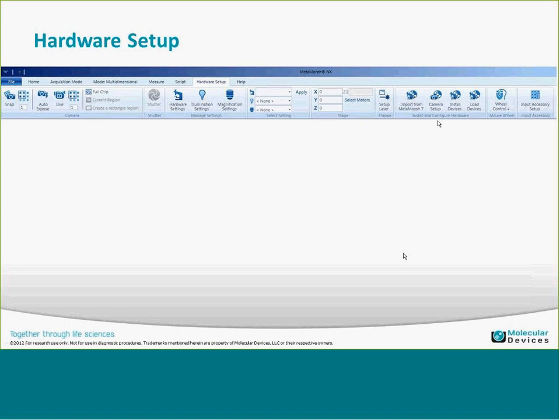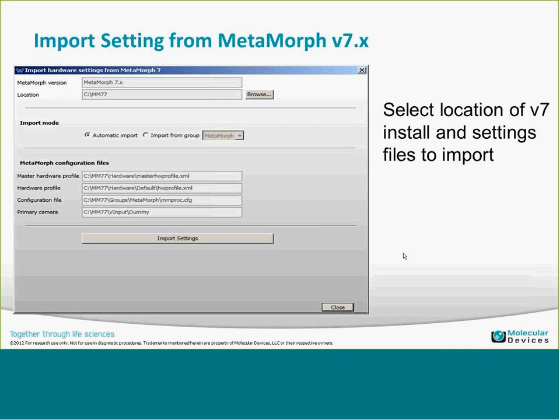The import from Metamorph 7 option — if you have Metamorph 7 installed on the system, you can import those settings directly. This can be somewhat finicky. I've had the most success selecting 'Import from Group' and selecting the Metamorph for Olympus group, using the default directories for those configuration files. That will import the hardware configuration, illumination settings, and specific camera information. If you've already had Metamorph for Olympus installed, you can bring those settings in to help with configuration.